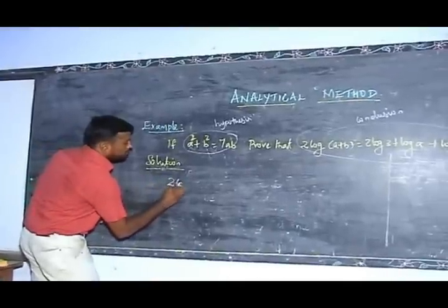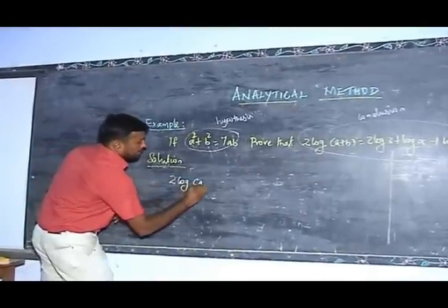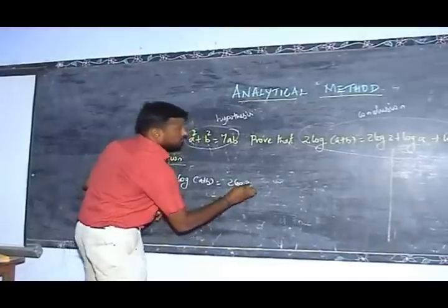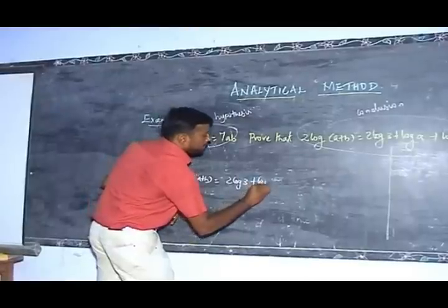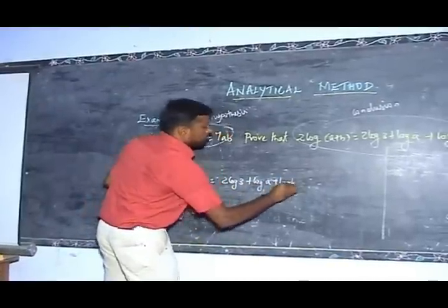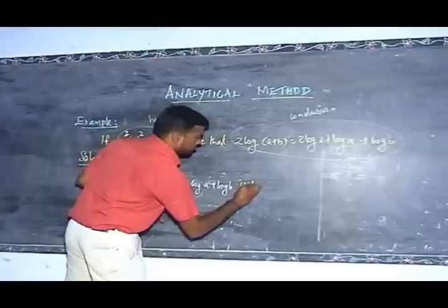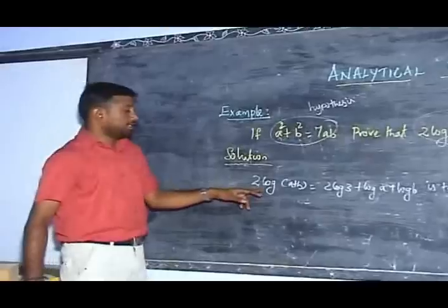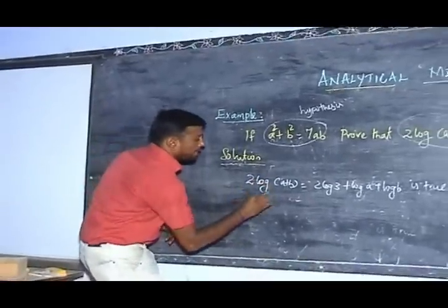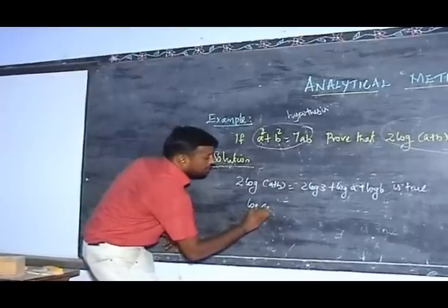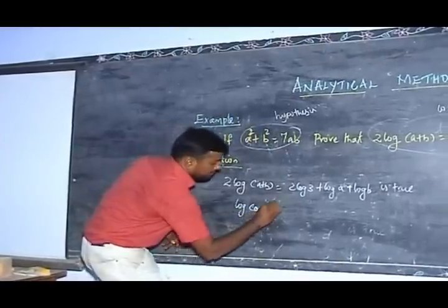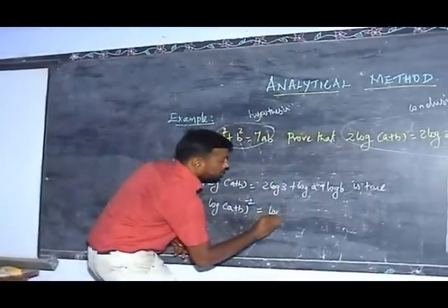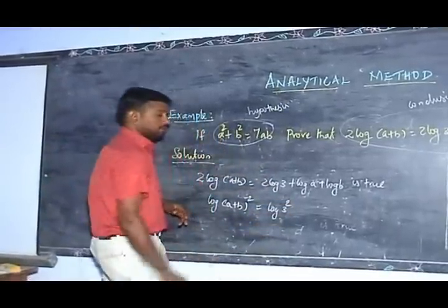First I take the conclusion part: 2 log(A plus B) is equal to 2 log 3 plus log A plus log B. We can write 2 log(A plus B) as log(A plus B) whole squared. Similarly, 2 log 3 can be written as log 3 whole squared, which equals log 9.